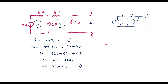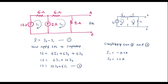Now let me simplify Equations 1 and 2. Using a calculator in equation mode with two unknowns, directly feeding the values gives: I1 = −0.5 A and I2 = 1.5 A. Therefore, VTH = 4 × I2 = 4 × 1.5 = 6 volts. So the Thevenin's voltage across terminals A and B is 6V.